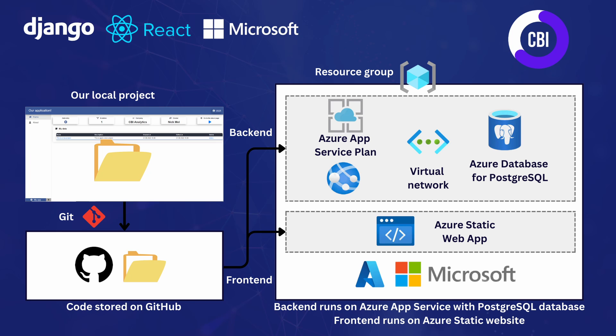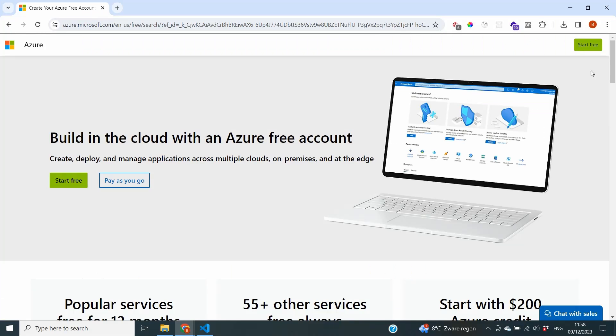Looking at this architecture you can clearly see what components we're actually going to need. First, you're going to need a GitHub account, which you can create for completely free on the GitHub website. In addition to that, we're going to bring our code from our local computer to GitHub using Git, so you will need to install Git on your computer as well. Git is just open source software and it's completely free to use. The last thing we'll also need is an Azure subscription.